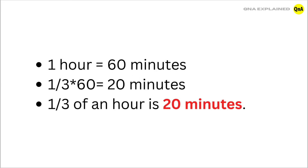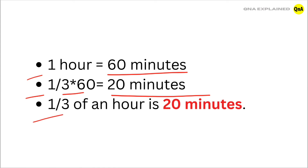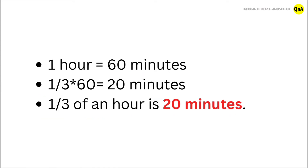Let's see once again. 1 hour equals 60 minutes. 1 by 3 into 60 equals 20 minutes. So the answer is: 1 by 3 of an hour is 20 minutes.